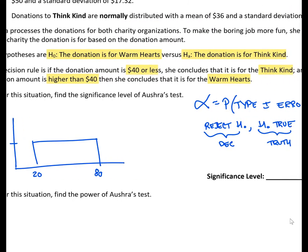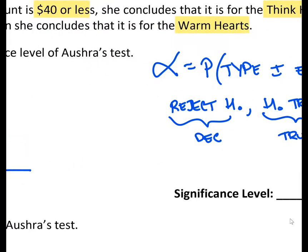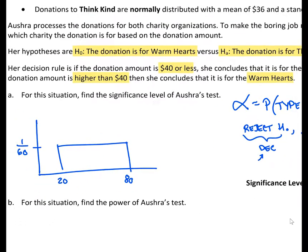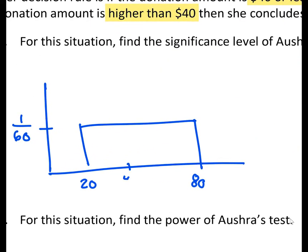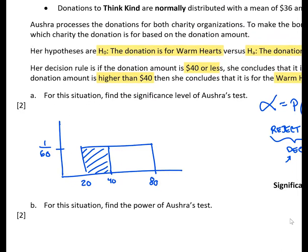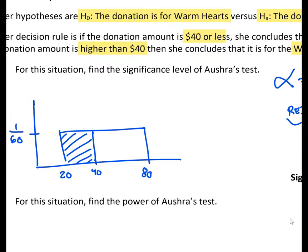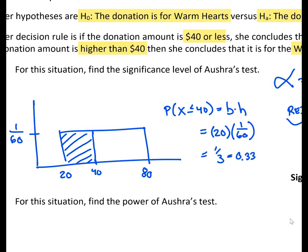To find the significance level, we find when we would mistakenly reject H0. We reject H0 and conclude it is for Think Kind when the donation is $40 or less. Adding $40 approximately on the graph, we want the probability that the donation is $40 or less. For a uniform distribution, the probability equals the area of the rectangle: base times height. Our base is $20 and our height is 1 over 60, giving us a value of 1/3, or 0.3333.